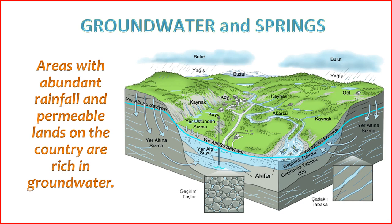The potential of groundwater and springs is influenced by various factors, both natural and anthropogenic. Here are some key factors: 1. Geological conditions — the type of geological formations, such as aquifers and permeable rocks, significantly influences groundwater potential. The presence of porous and fractured rocks allows for the storage and movement of water.